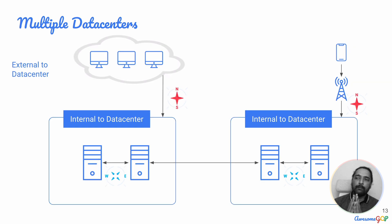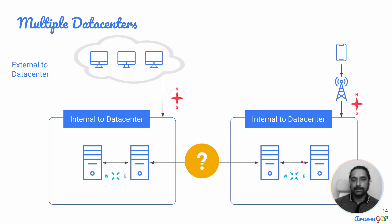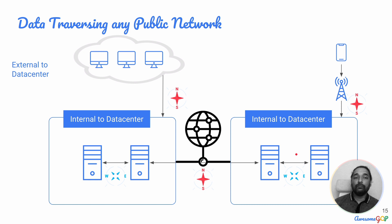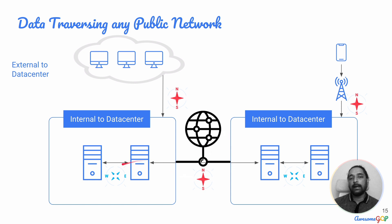There is an additional question about what happens when there are multiple data centers — say one region from a public cloud and another one elsewhere. Traffic coming from external devices or external mobiles and computers would clearly be north-south traffic. But what about traffic going between these data centers? In certain public clouds, there is no complete private network, so data may leave one data center, enter the public network, and then re-enter the other data center. This would still be considered north-south traffic because it is exiting and re-entering the data center.